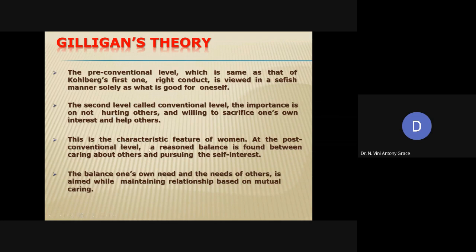This characteristic feature is found in most women. At the post-conventional level, a balance is found between caring about others and pursuing self-interest. Here again, they will care more for others and do not want to spoil relationships, so they take decisions accordingly. This is the modification of Gilligan's theory compared to Kohlberg's theory.